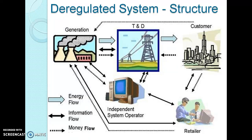In the deregulated structure, different power sellers will deliver their product to their customers via a common set of transmission and distribution wires. Hence, the people have the freedom to buy the required power from any of the power producers through the supervision of the ISO at their convenient price.